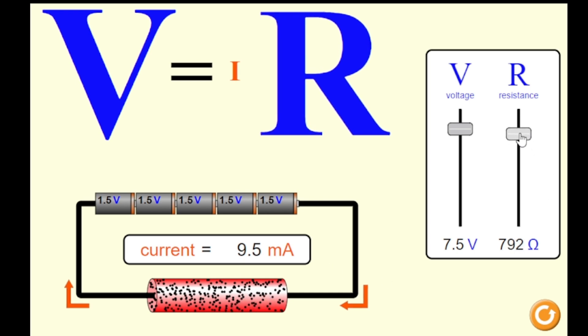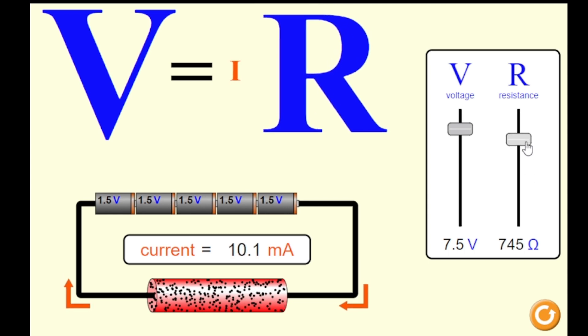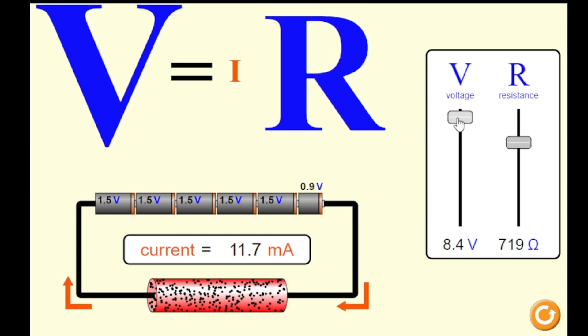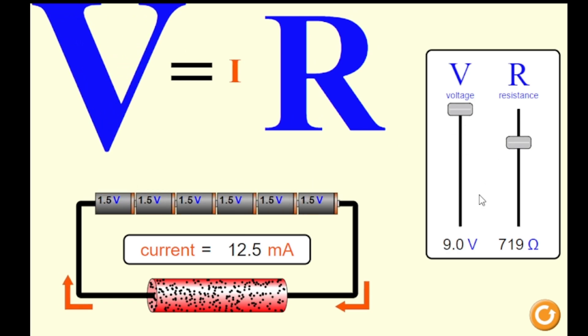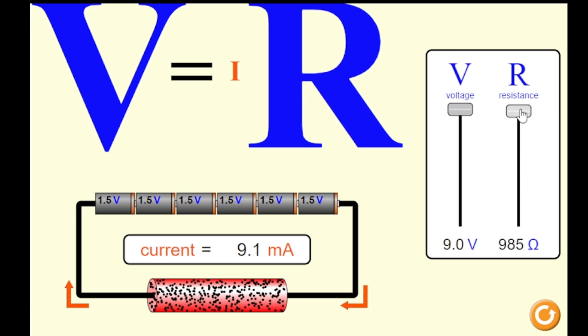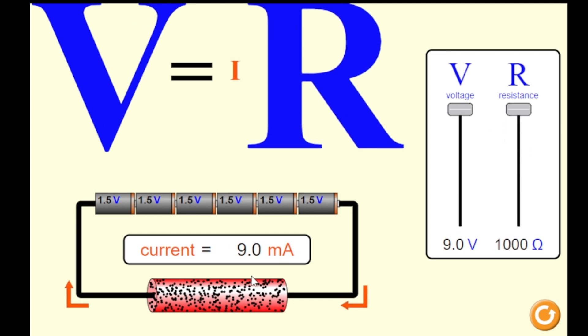If we increase the resistance, for example, if we limit our voltage at maximum level and voltage is at maximum level, what is your observation? The current reduces. It means that your electrons are having a hard time flowing in the conductor due to the presence of your resistance.